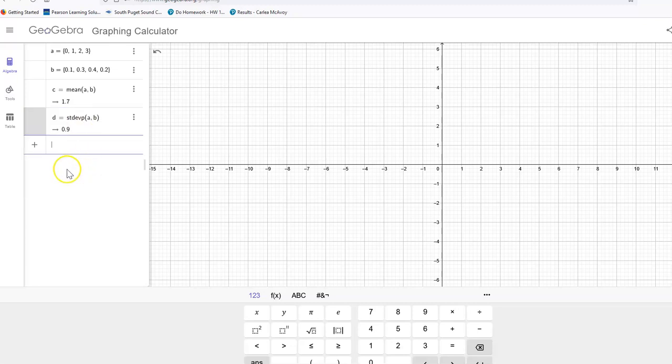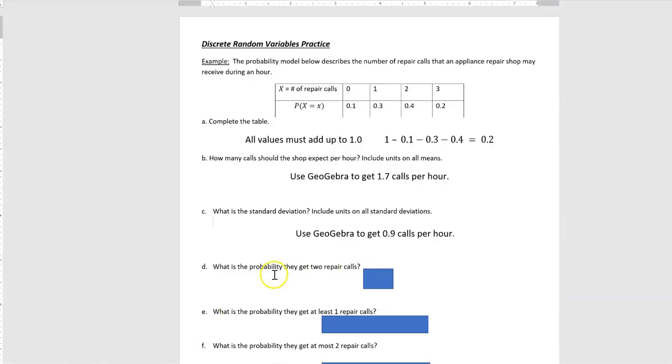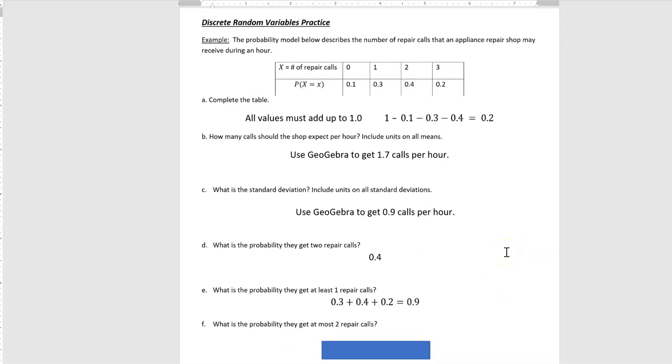All right, let's see what else they're asking us here. What is the probability they get two repair calls? So that's just looking at this distribution and answering it. Two repair calls would be 0.4. What's the probability they get at least one repair call? At least one means they might get one or more, so if we look at our distribution here, we might get one or two or three. And so to get that probability, we just add those together and say there's a 0.9 chance that they would get at least one.